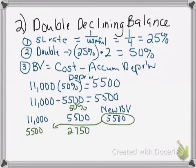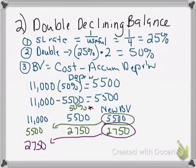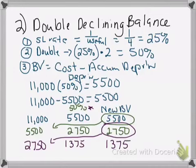To get our new book value for year two, we take $5,500 minus $2,750, which gives us $2,750. That new book value moves down to year three. We take $2,750 and multiply that by 50%, giving us $1,375 for year three depreciation. Then we have a new book value of $1,375, which moves down to year four.